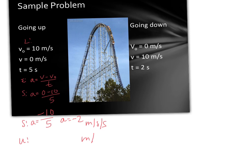So think about it. If you're going up on a roller coaster, do you speed up or do you slow down? Hopefully you're saying that you slow down, and that is why our acceleration ends up being negative, because the acceleration is working against the direction that the car is going.